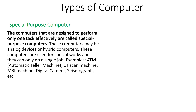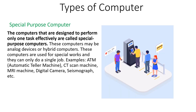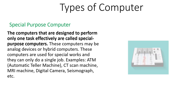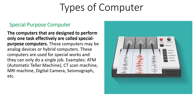Special purpose computers may be analog or hybrid computers, and they are used for only one type of job. For example, the ATM machine — its task is to help customers withdraw money. Similarly, the CT scan machine is used in hospitals for finding out the disease of the patient. The digital camera or the seismograph machine is used to measure the magnitude of the earthquake.